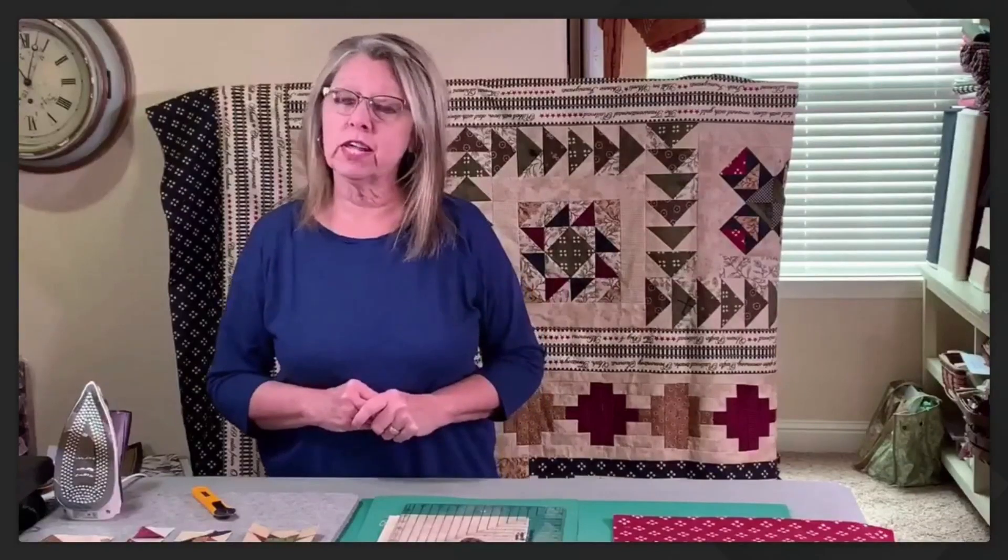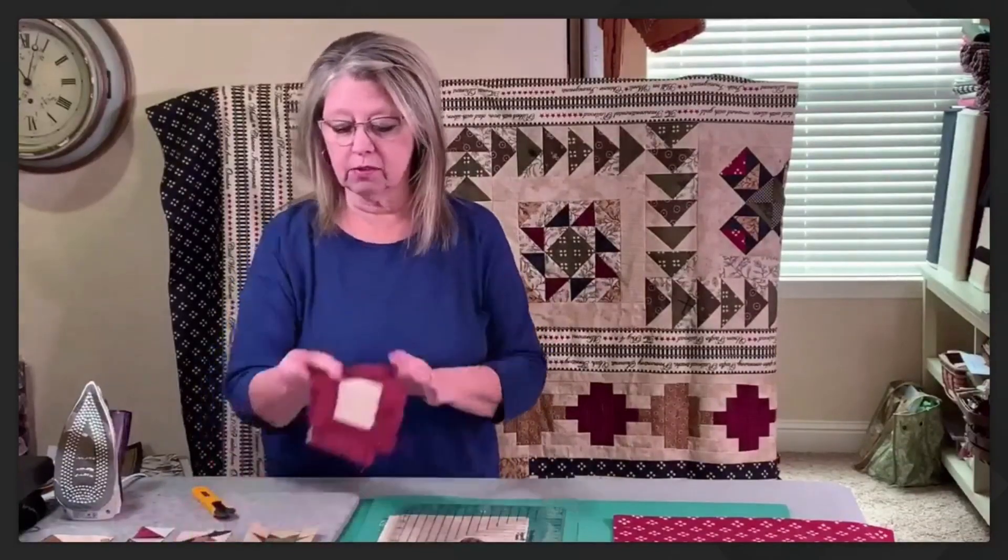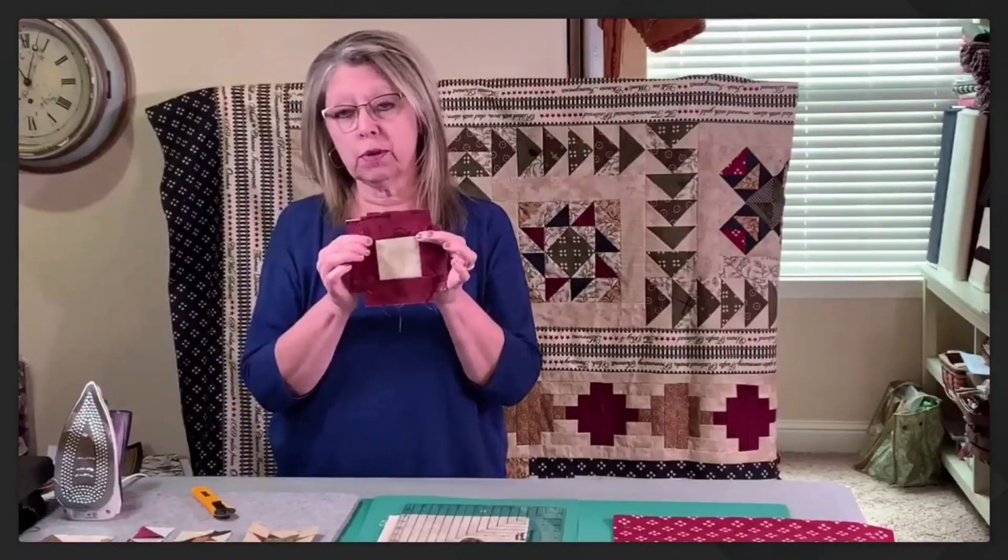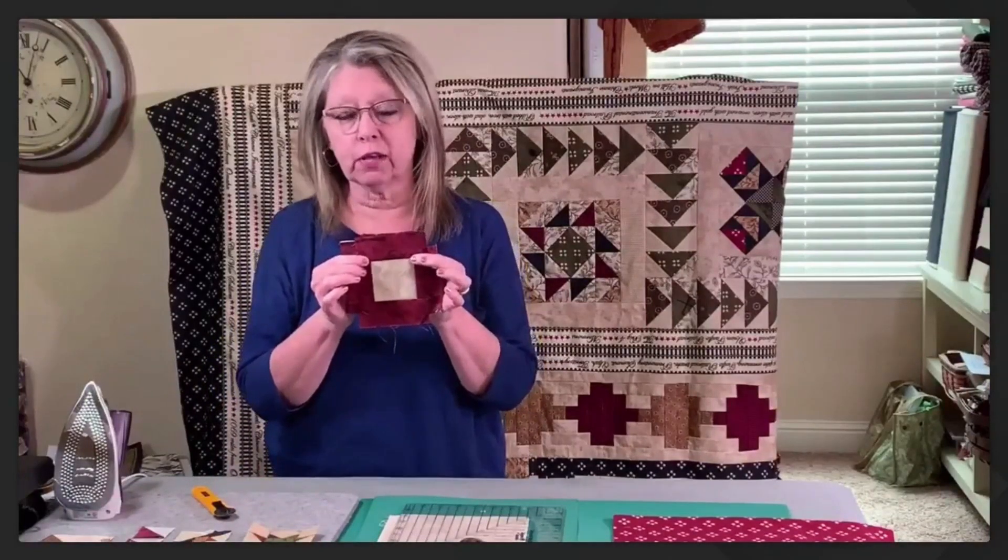The square and square system is very easy. You're just going to cut squares and strips and sew them together to get what we call the basic square. And then the different ways you trim this up, you get all those different triangle units.